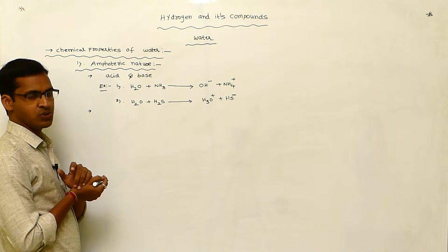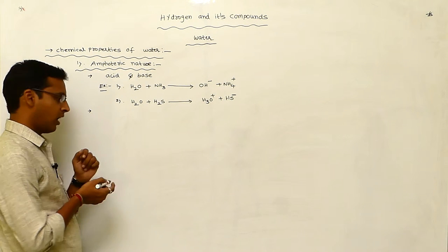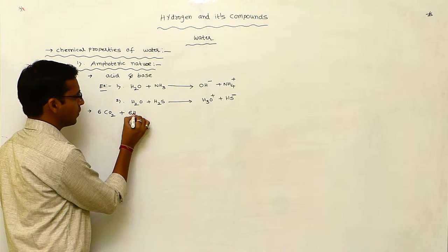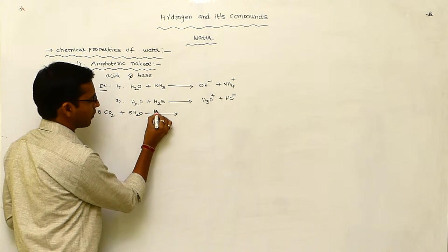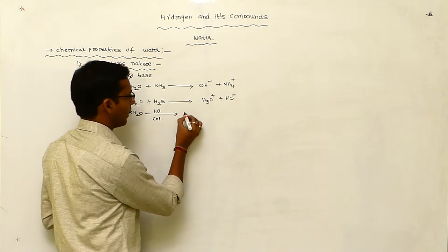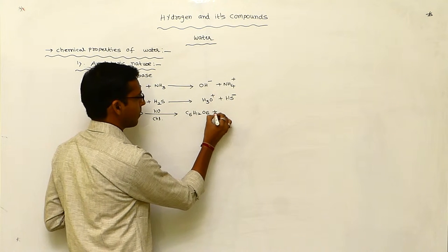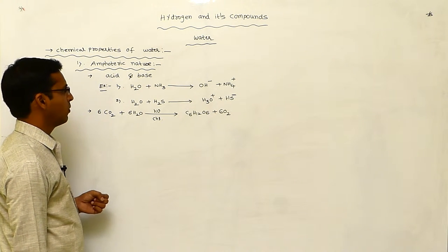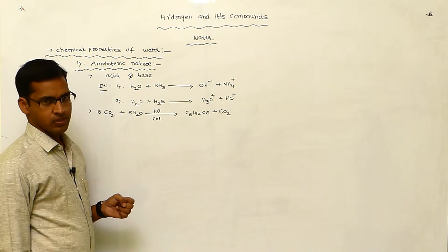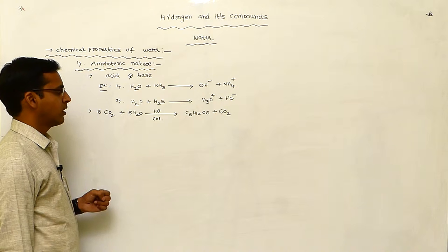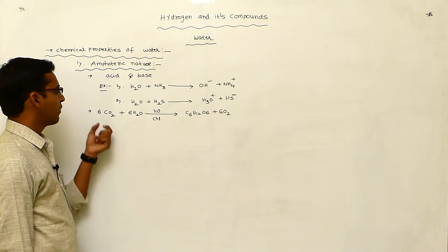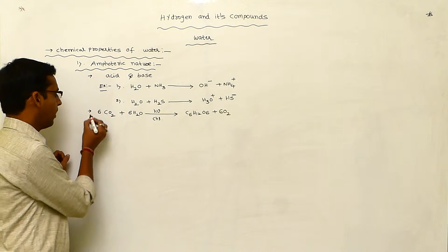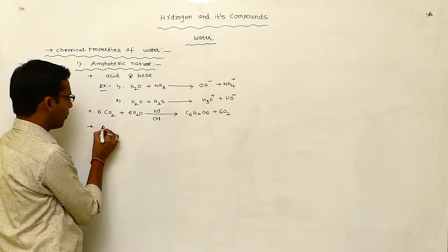Hydrogen easily undergoes reduction in the presence of active metals. Also in the photosynthetic reaction: 6CO2 + 6H2O, in the presence of photochemical conditions with chlorophyll, it is converted to C6H12O6 plus 6O2. So water molecule is also involved in the photosynthetic process in a plant — the preparation of carbohydrate like glucose from carbon dioxide and water in the presence of chlorophyll.